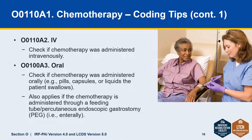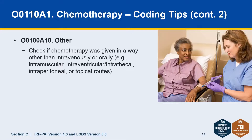You would check IV if the chemo was administered intravenously, and oral if the chemotherapy was in pill or liquid form. One important note is that the term oral also applies if the chemo is administered through a feeding or a PEG tube. And check other if the chemo was given another way and not given IV or orally. Some examples include IM, intrathecal, interperitoneal, or even topical routes, such as some of the creams that are used to treat skin lesions.